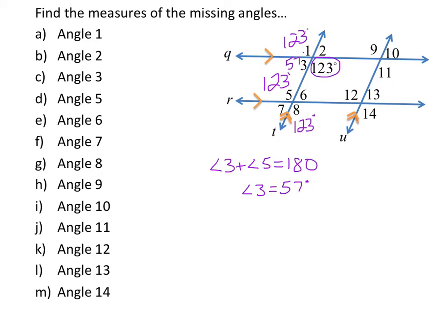So if angle 3 is 57, that makes angle 6 equal to 57 because they're alternate interior angles, angle 2 equal to 57 because that's corresponding with angle 6, and angle 7 equal to 57 degrees because it's alternate exterior with angle 2. On the right side, angle 9 is 123 because it corresponds with angle 1, angle 10 is 57 corresponding with angle 2. Then angle 12 is 123, angle 14 is 123, angle 13 is 57, and angle 11 is 123.